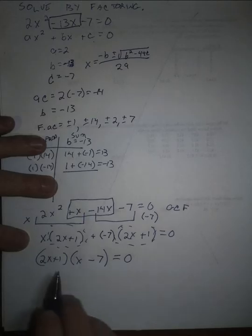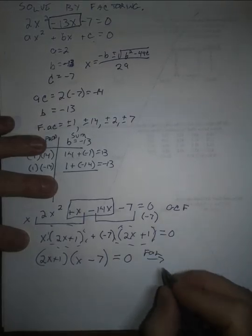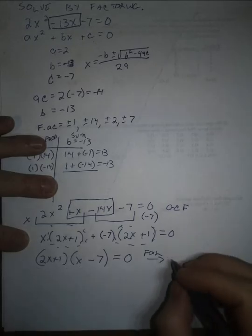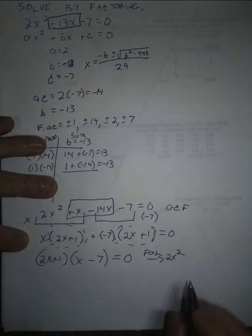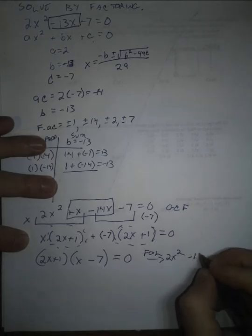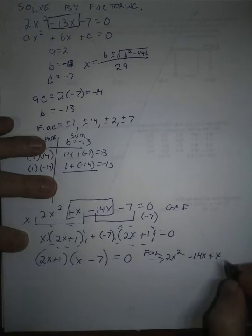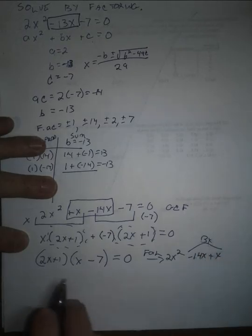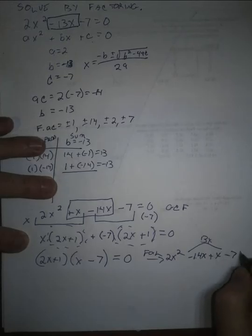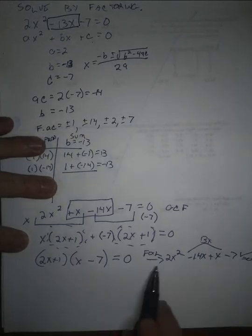How would I check that? Let me foil it real quick. 2x times x is 2x squared. 2x times negative 7 is minus 14x plus x. That becomes 13x, yes, and then minus 7, yes, equals 0. So I foiled that out to check it.